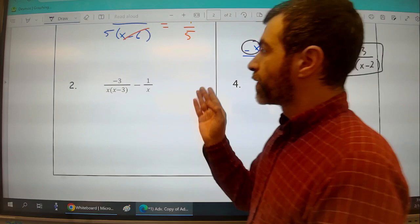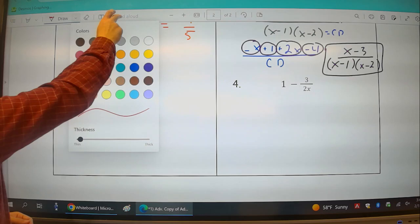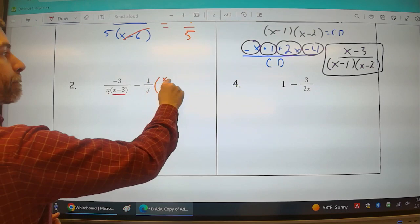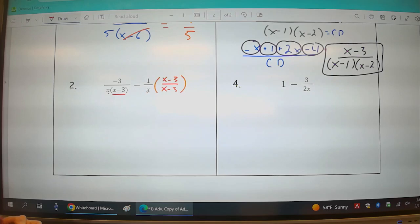Moving to number 2. These two don't have common denominators, but I do realize they both have a common factor. x here, x there. This first fraction I don't have to mess with, but I can take that missing x minus 3 and multiply both the numerator and the denominator by x minus 3.